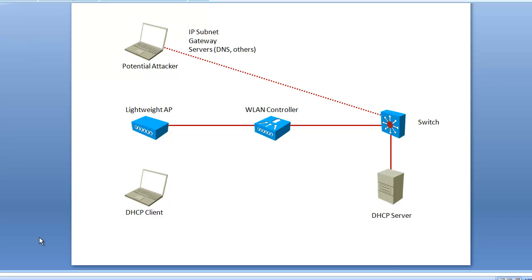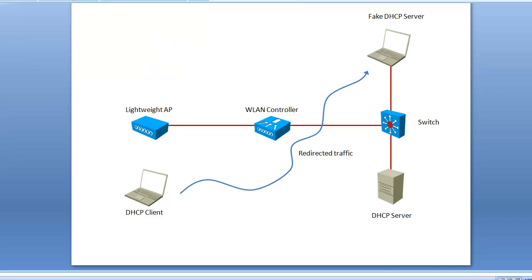The second issue is that any DHCP service can provide an IP address to a requesting client. If somebody connects a fake DHCP server on that switch, that server may be able to provide an IP address to requesting clients without the client knowing it's a fake server. The advantage for an attacker is to provide fake information — such as a wrong gateway — that will redirect all traffic to the attacker's laptop. So the DHCP service is unsecured by default.